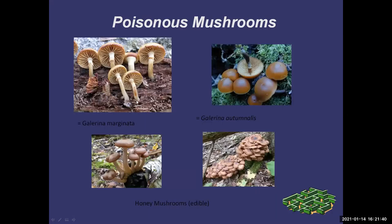Galerina — this is what they look like. There are two more common poisonous varieties: marginata and autumnalis. You can see they kind of look like honey mushrooms. Brown spore print versus white spore print — just be careful. Sometimes you'll have both on the same log. So if you're picking honey mushrooms, go through them one by one to make sure you don't have some Galerina mixed in there, because even one will put you into kidney failure.